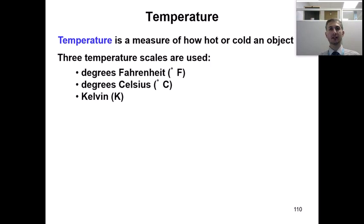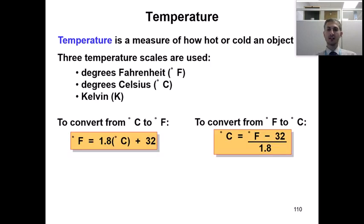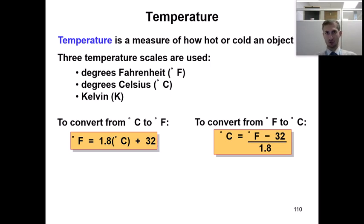Whenever we work with temperature concepts, we need to know how to convert one unit to another. For our class, we need to know the equation to convert from degrees Celsius to degrees Fahrenheit. If you memorize the first one, you can rearrange it to get the second. Degrees Fahrenheit equals 1.8 times degrees Celsius plus 32.